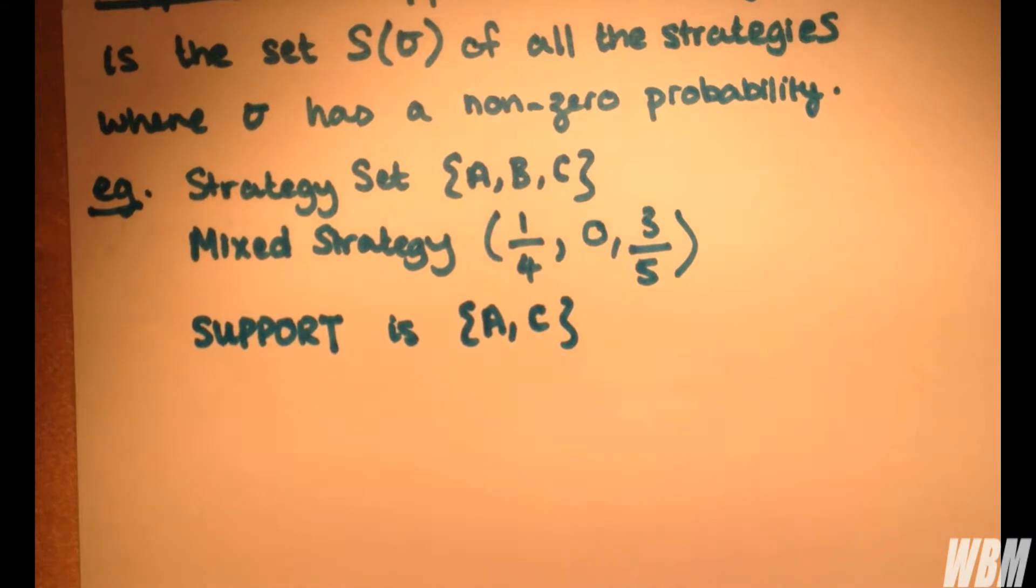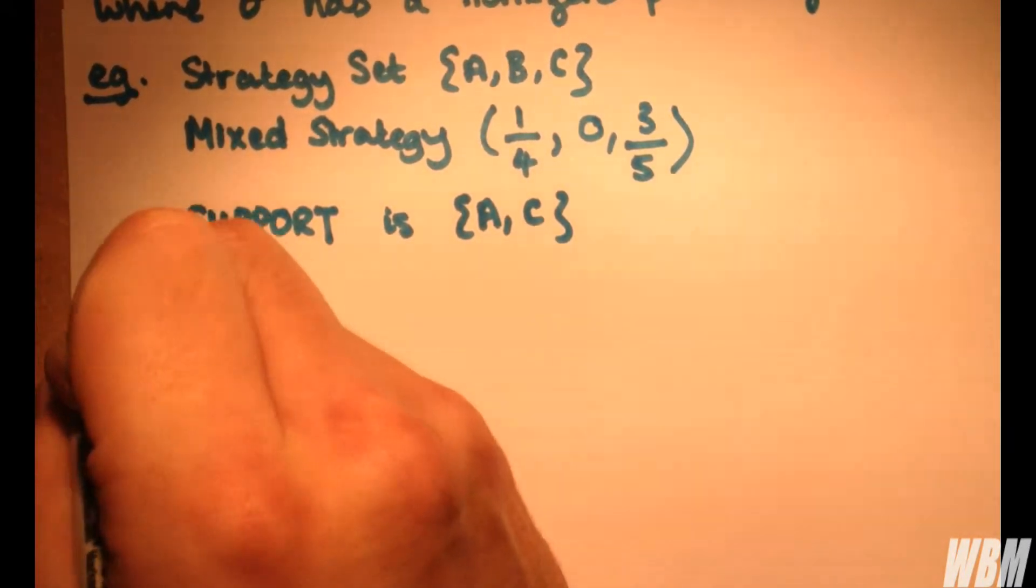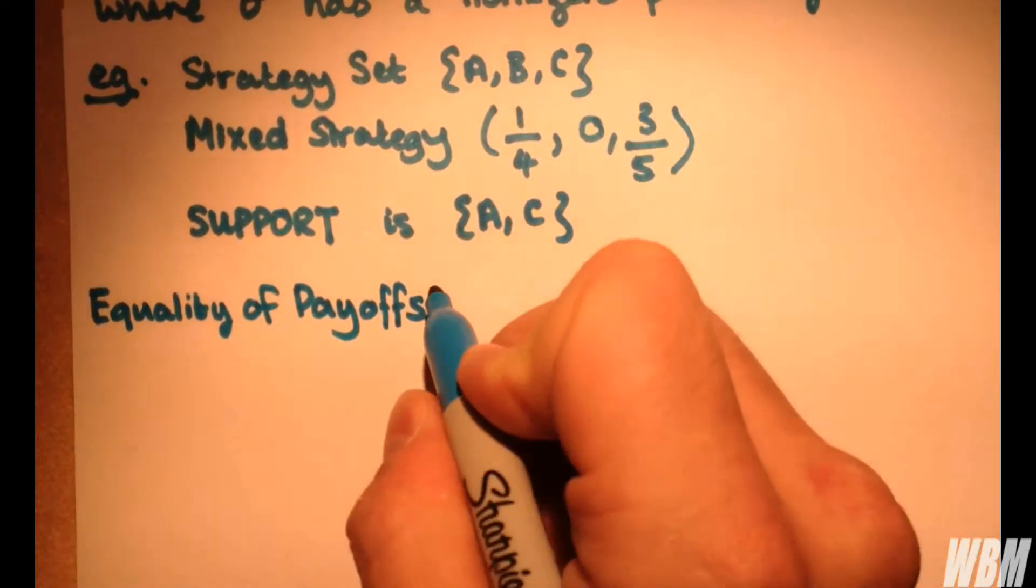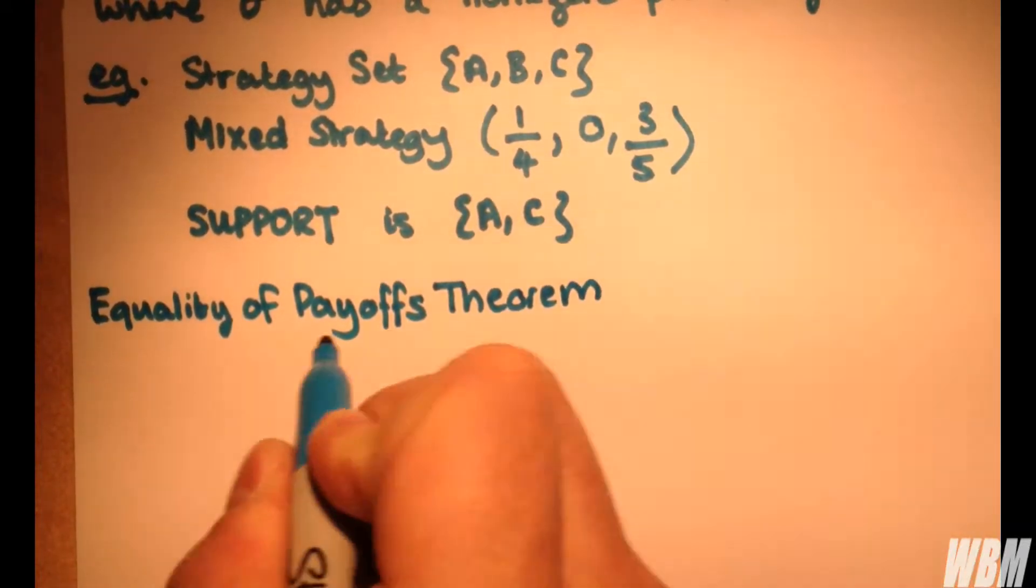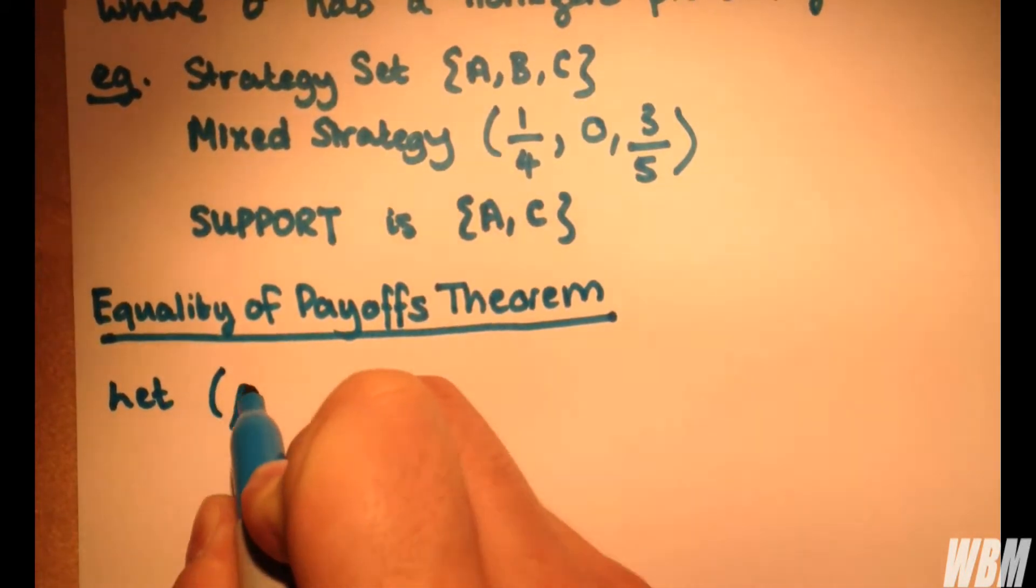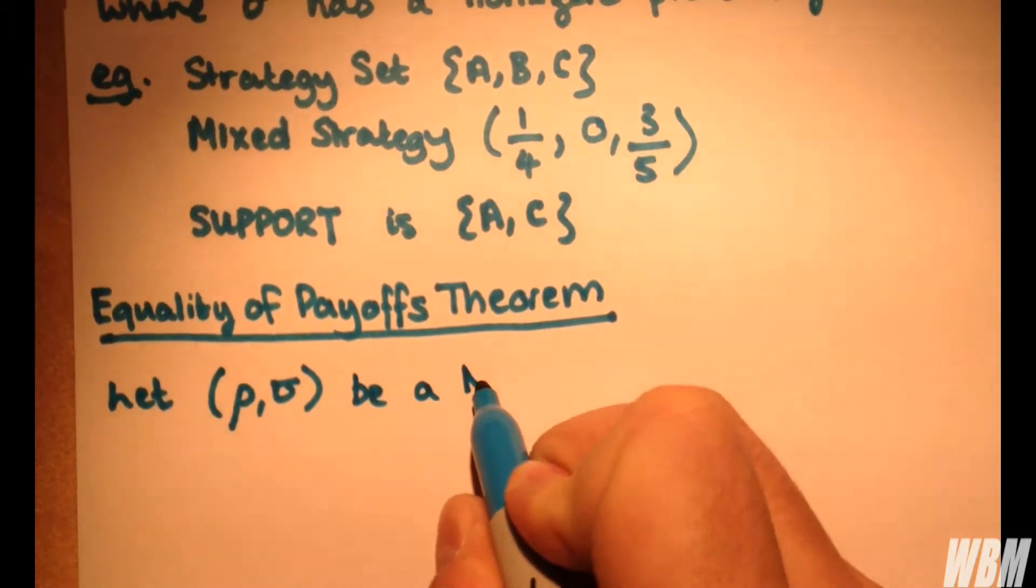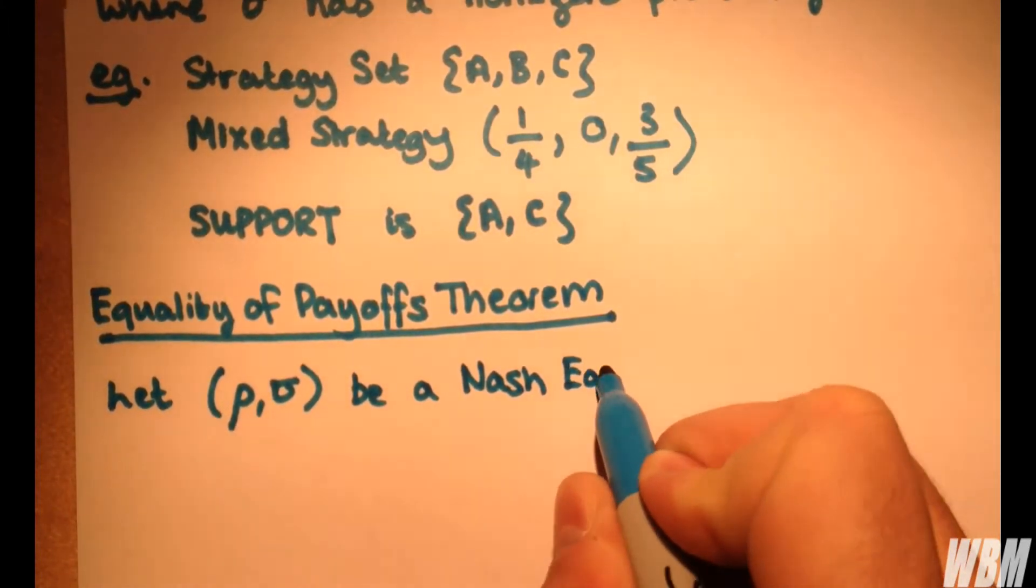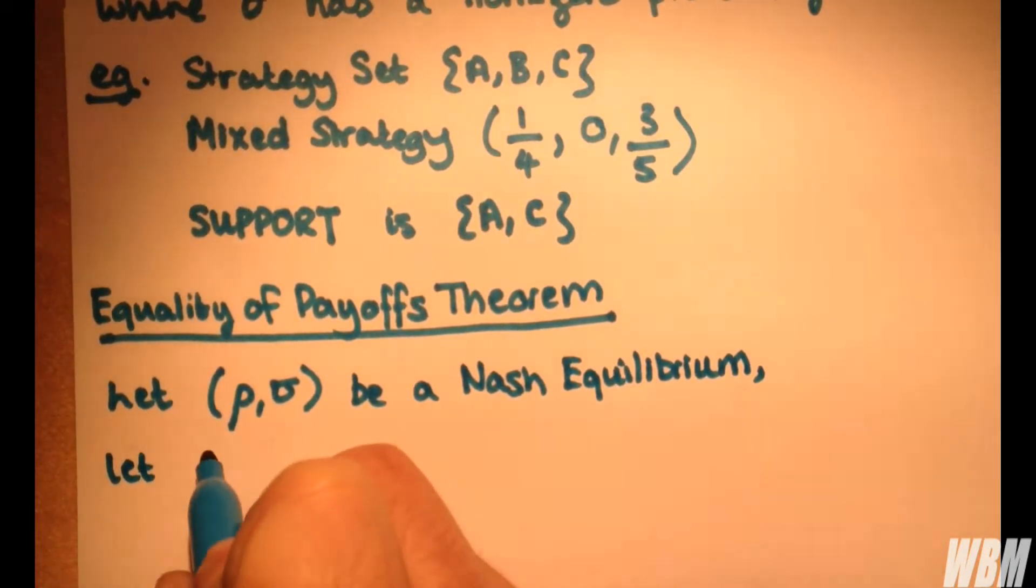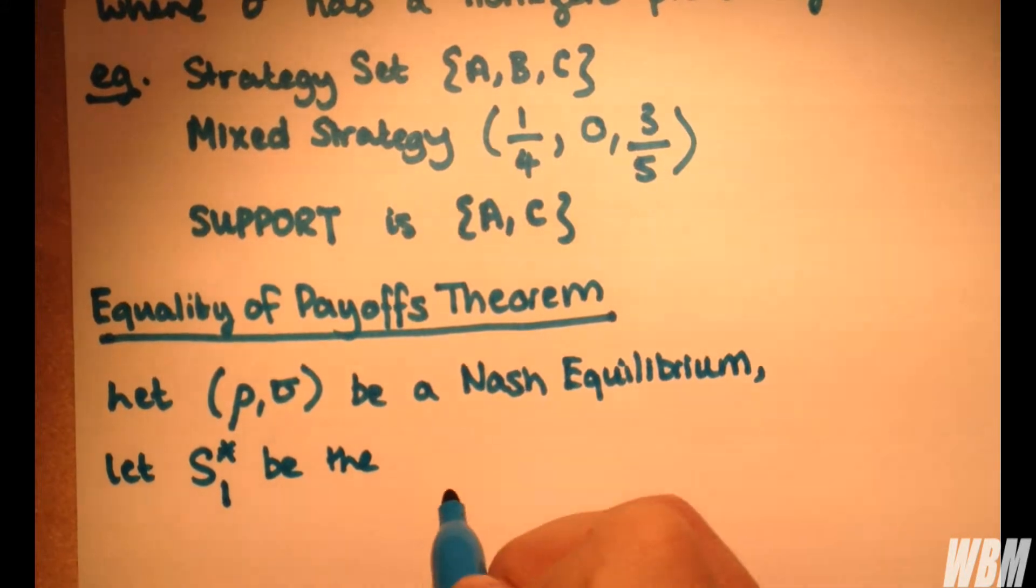So how does this affect the equality payoff theorem? Well, let's quickly write down the theorem. If we let (ρ, σ) be a Nash equilibrium, and we let S*₁ be the support of ρ, so this is the support set of ρ.